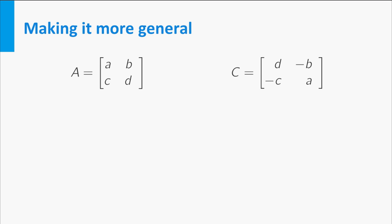With A given by a, b, c, d and C by d, minus b, minus c, a, we can do the multiplication of C and A and arrive at a diagonal matrix with ad minus bc on the diagonal.